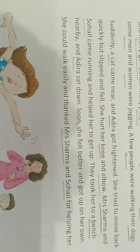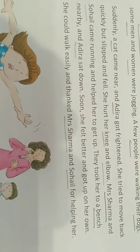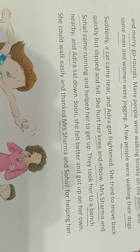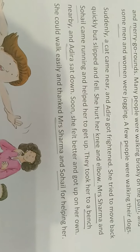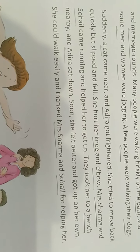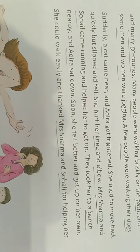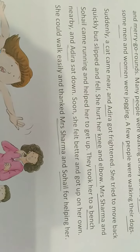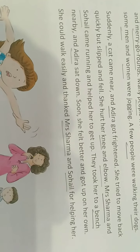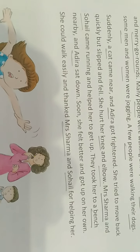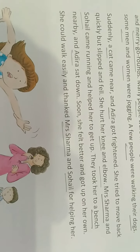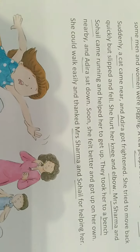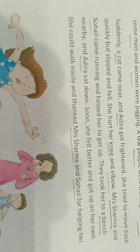Now we will move on to the second paragraph of this passage. 'Suddenly, a cat came near and Adhira got frightened.' Cat and Adhira are the two nouns. 'She tried to move back quickly but slipped and fell.' In this line there is no noun. 'She hurt her knees and elbow.' In this sentence, two nouns are there: knee and elbow. 'Mrs. Sharma and Shohel came running and helped her to get up.' Here, Mrs. Sharma and Shohel are the two nouns. 'They took her to a bench nearby and Adhira sat down.' Here, bench and Adhira are the two nouns.